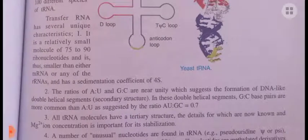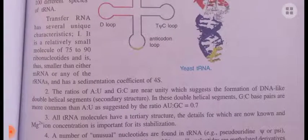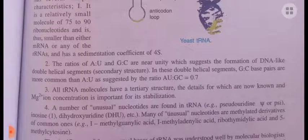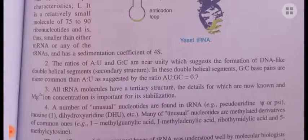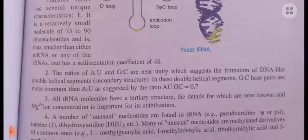In the double helical segments of tRNA, GC base pairs are more common than AU base pairs, as suggested by the ratio of AU to GC equaling 0.7. The amount of guanine-cytosine base pairing is common, possibly due to the stability of tRNA, since guanine-cytosine base pairs with three hydrogen bonds — showing that although tRNA is single-stranded, it maintains a stable structure.